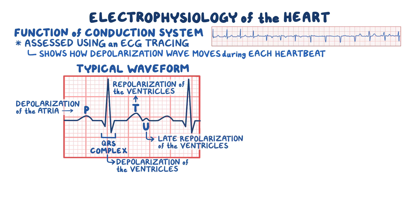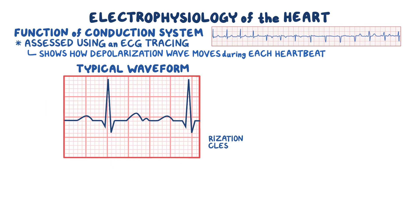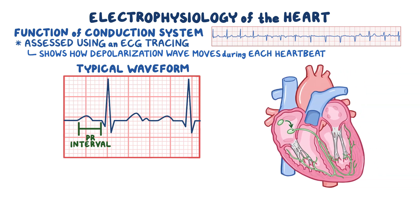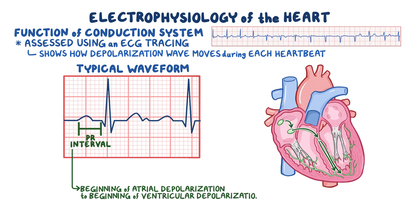In addition, there are certain intervals and segments. There's the PR interval, which spans from the beginning of the P wave to the beginning of the QRS complex, representing the time for the impulse to travel from the SA node to the Purkinje fiber network — that is, from the beginning of atrial depolarization to the beginning of ventricular depolarization. Within this time is the PR segment, which is the time between the end of the P wave and the beginning of the QRS complex, representing the time required for the impulse to travel through the AV node to the Purkinje fibers.